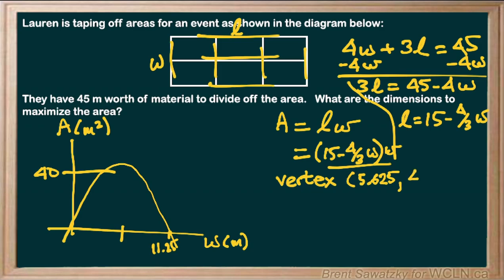The maximum area is 42.2 meters squared. Good, but in this case we're mostly interested in the dimensions, so we have our width there and we can identify that the width is 5.625 meters.